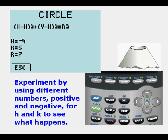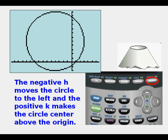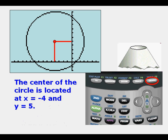We can experiment by using different numbers, positive and negative, for H and K to see what happens. Let's see what happens with negative H and positive K. The negative H moves the circle to the left and the positive K moves it up. The center of the circle is located at X equals negative 4 and Y equals 5.